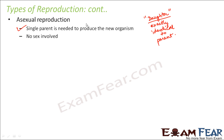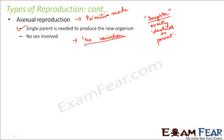Asexual reproduction is the primitive mode of reproduction, meaning it came before sexual reproduction — it is more ancient. In asexual reproduction, there is no scope for variation, because variation happens only when the daughter organism has some traits which are new or different from the parent. But here the daughter is exactly identical to the parent, so there is no scope for any variation.